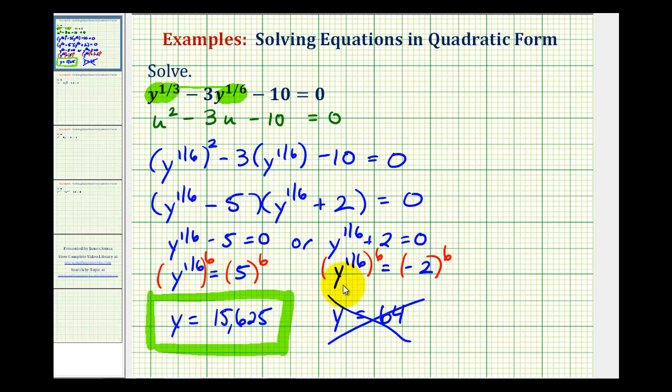When we had the equation y to the one-sixth equals negative two, in radical form, that would be the sixth root of y equals negative two. Remember when the index is even, this result would always be greater than zero. It cannot equal a negative value. So that's really the reason why there was no solution.